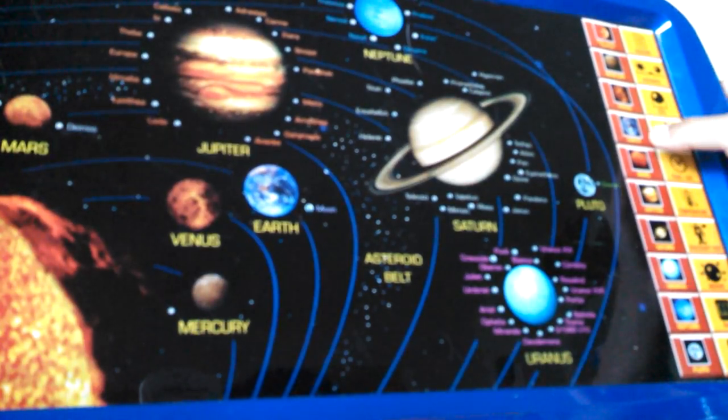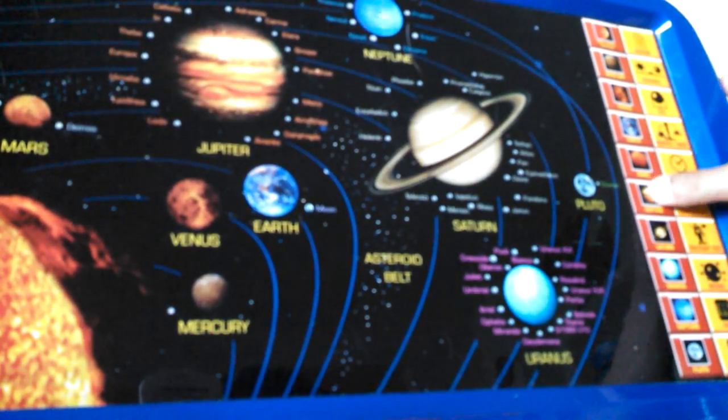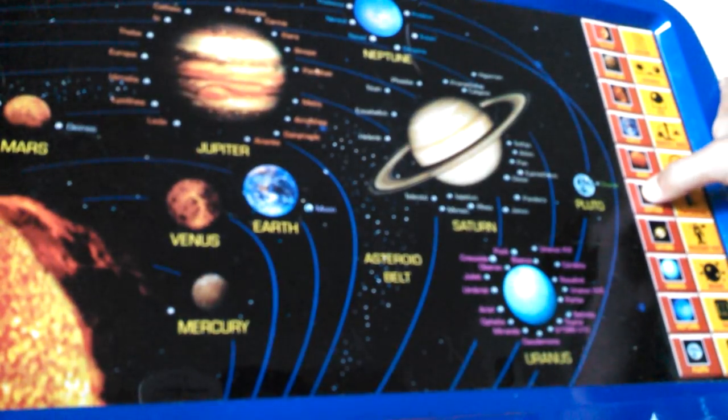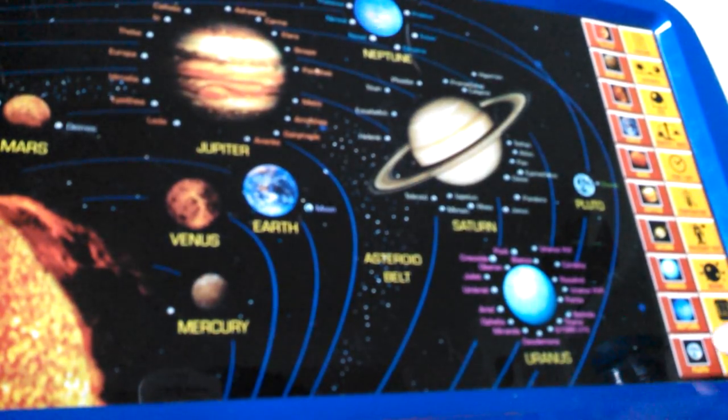Neptune is the fourth largest planet in the solar system. Its diameter is about 30,775 miles.